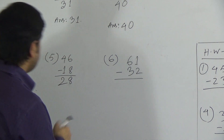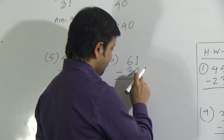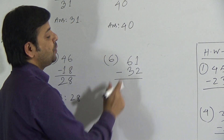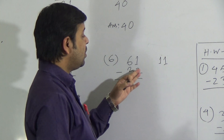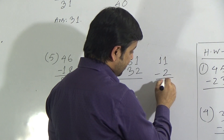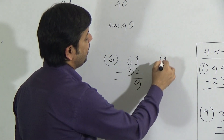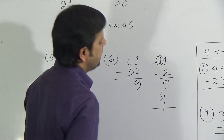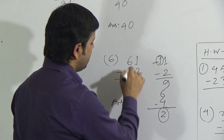Now the last question. Again we need to subtract 2 from 1 in the unit place. Since 2 is greater than 1, we borrow 1 from the left: 1 becomes 11. We always place the borrowed digit 1 on the left side. Now 11 minus 2 equals 9, so write 9. Since we borrowed 1, add it to the next digit of the second number: 3 plus 1 equals 4. Now subtract 4 from 6: we get 2. The answer to the last question is 29.